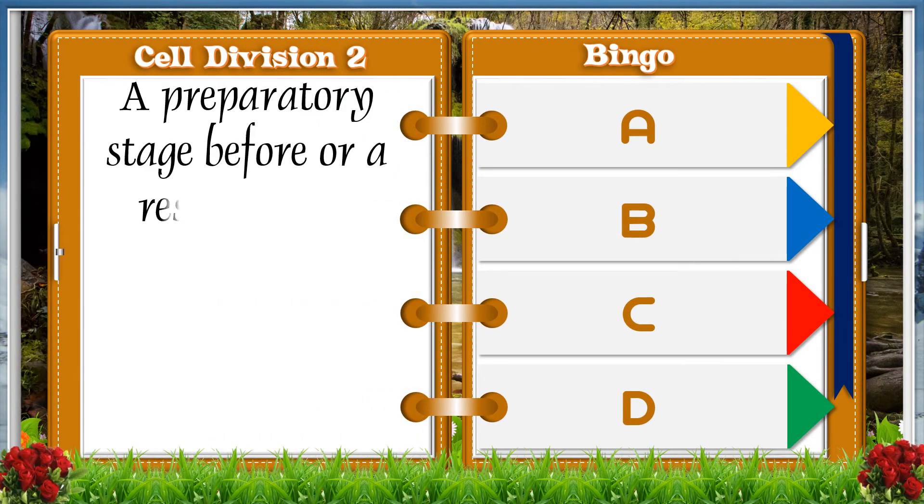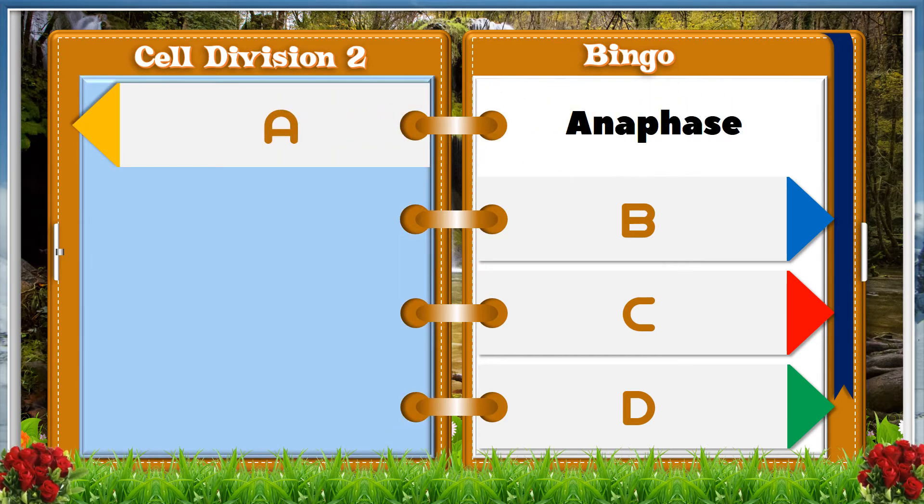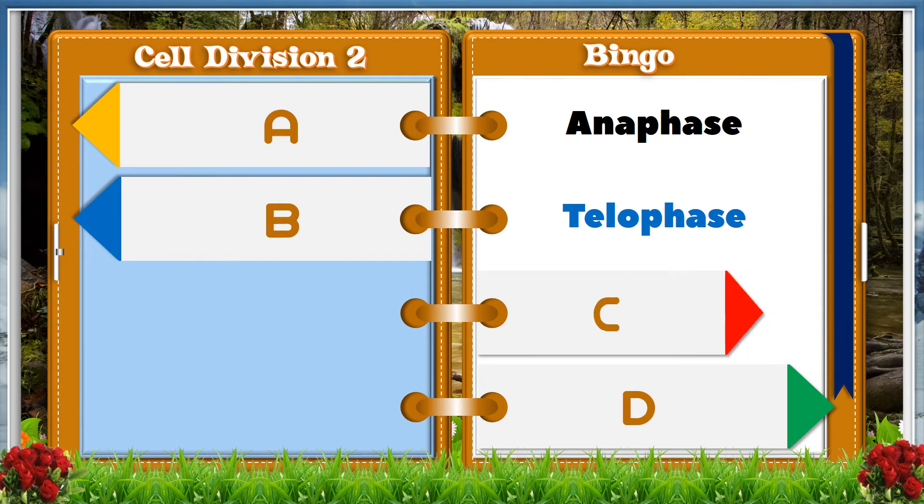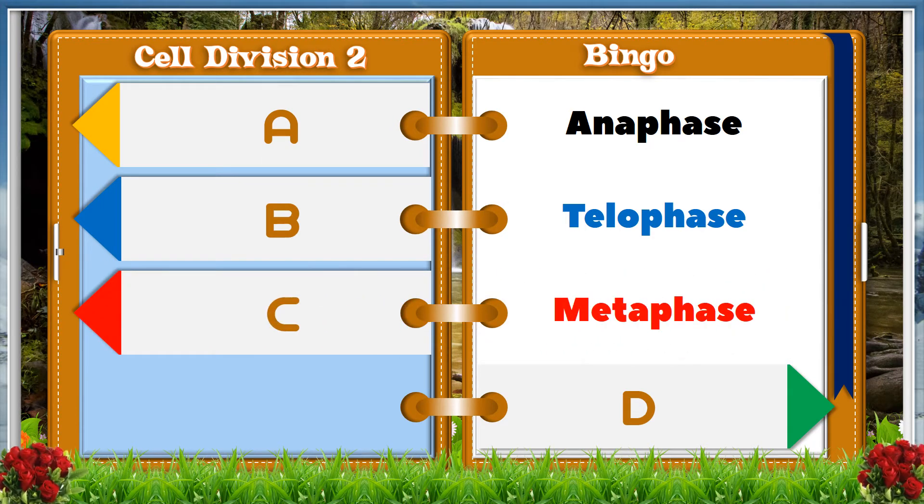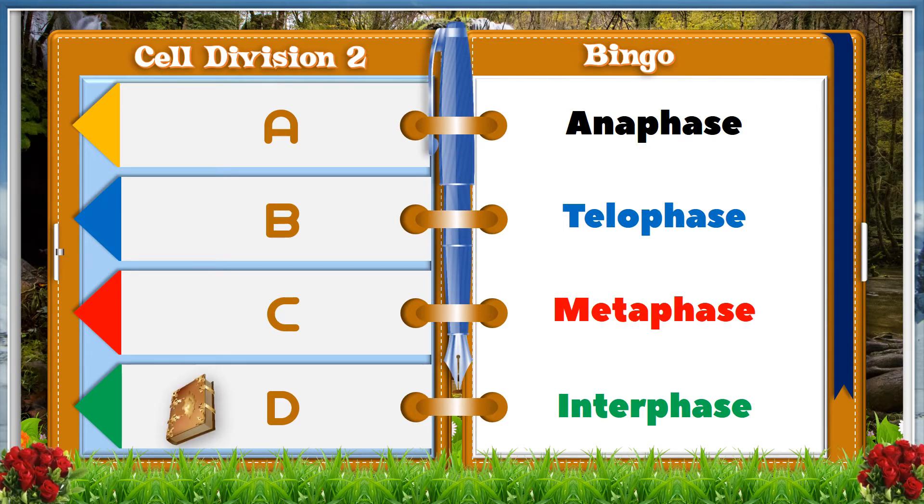A preparatory stage before or a resting stage after mitosis or meiosis. It is followed by prophase. A: anaphase, B: telophase, C: metaphase, D: interphase. And the answer is D, interphase.